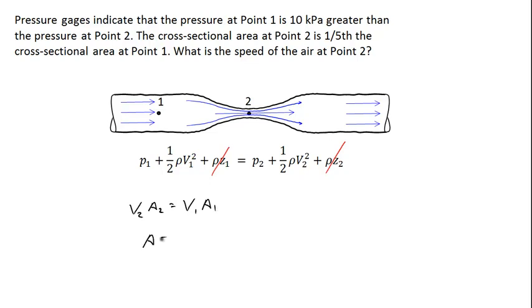A two is equal to one fifth that of A one. And with these two equations we can deduce that the velocity at point one is one fifth the velocity at point two. So the speed at point two is five times greater than the speed at point one.